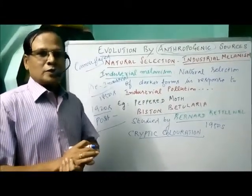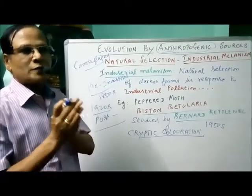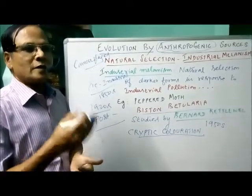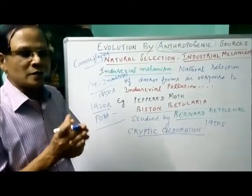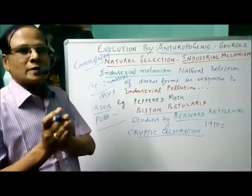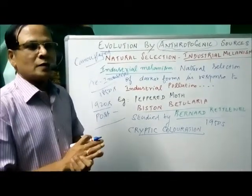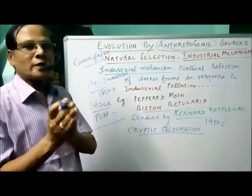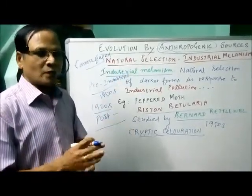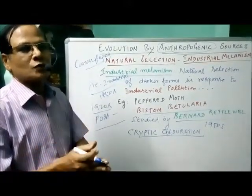Another example: we take antibiotics to kill microorganisms and prevent disease. When you take the same antibiotic for a longer duration, a resistant variety develops that will not be killed by that particular antibiotic. So a resistant new species develops — this is also an example of human activities leading to anthropogenic evolution. Evolution of new species by human activities is called anthropogenic evolution.